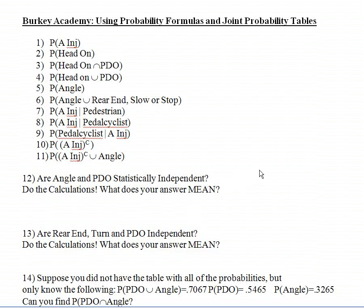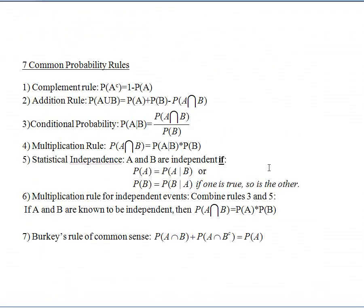Pause the video and write these questions down and make sure that you have a list of these seven formulas in front of you — seven common probability rules: the complement rule, the addition rule, conditional probability rule, multiplication. You don't have to write down the names if you don't want to, but you need to have these formulas in front of you so that you can reference them.